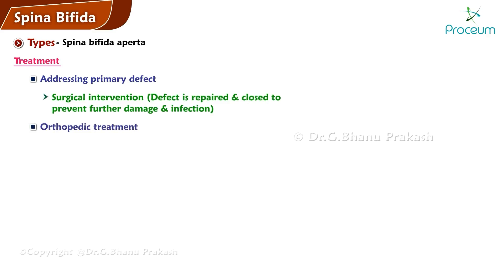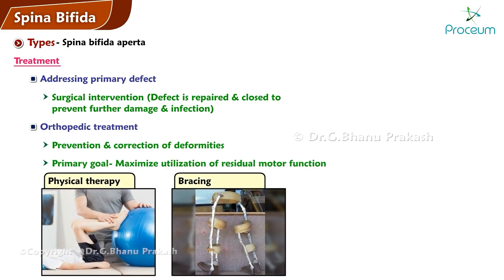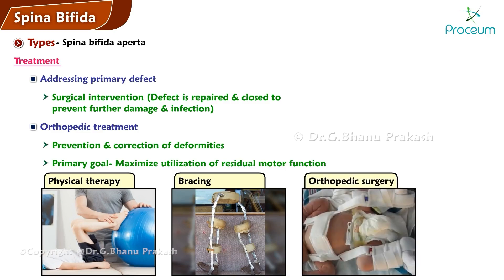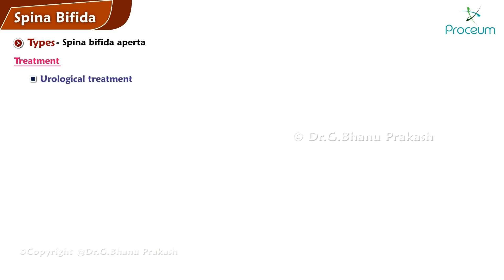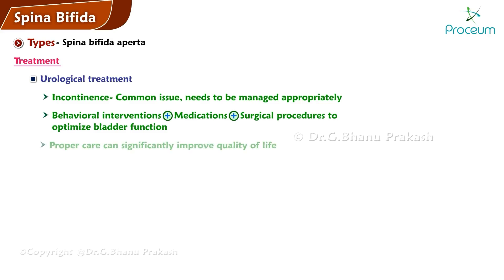Orthopedic treatment focuses on the prevention and correction of deformities, with the primary goal being to maximize the utilization of residual motor function. It may involve physical therapy, bracing, or in some cases orthopedic surgery to correct significant deformities. Urological treatment is also important, as incontinence is a common issue in these patients. This might involve a combination of behavioral interventions, medications, and potentially surgical procedures to optimize bladder function, which can significantly improve the quality of life of these patients.